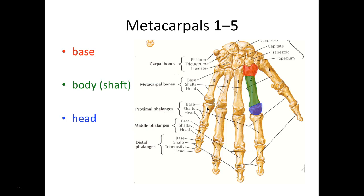Looking beyond the carpals we can see our metacarpals, which sit within the palm or dorsum of your hand. There is muscle in this area too, so you can feel the metacarpals better on the dorsum of your hand. We have five metacarpal bones — one, two, three, four, five — and each metacarpal bone is broken down into a base, body, and head.